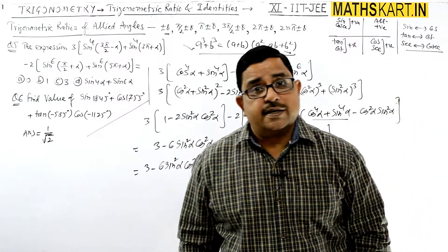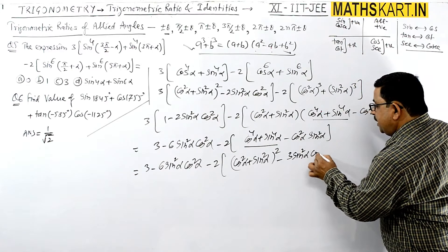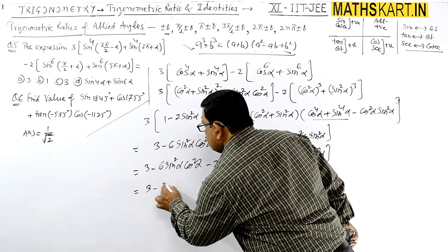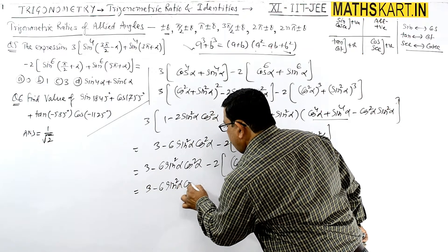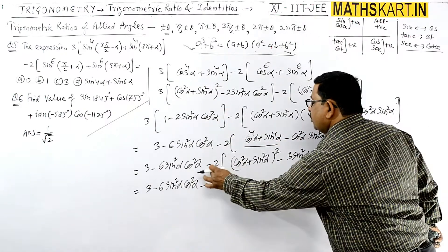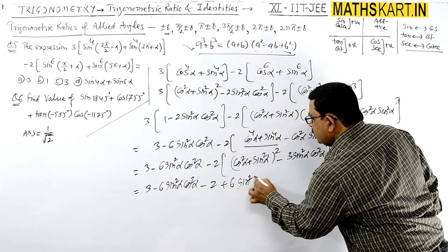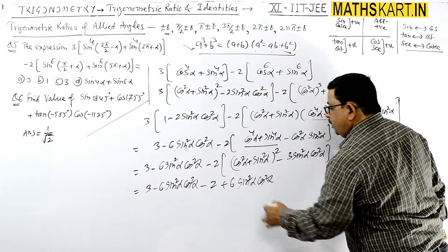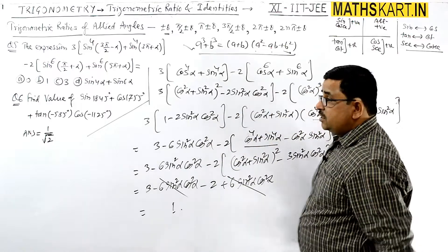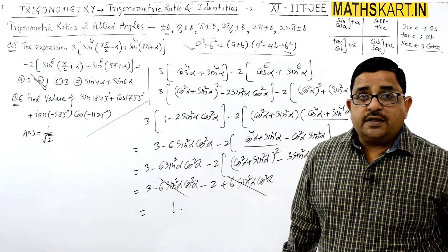So it will be minus 3 times of sin^2 α cos^2 α. And just open the values now, this is minus 3 minus 6 sin^2 α cos^2 α, and this is 1. So minus 2 is there, and minus 2 into minus 3, this is plus 6 times sin^2 α cos^2 α. Plus 6 minus 6 cancels, 3 minus 2 equals to 1. See the answer, B option is correct here.